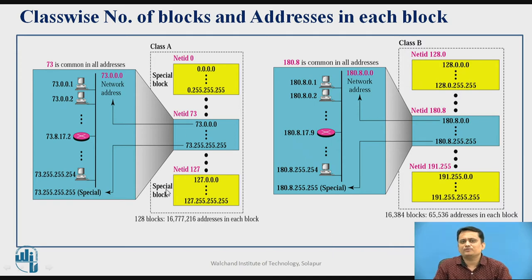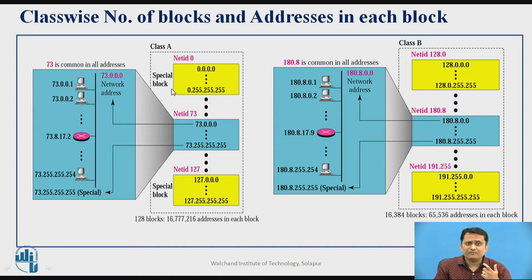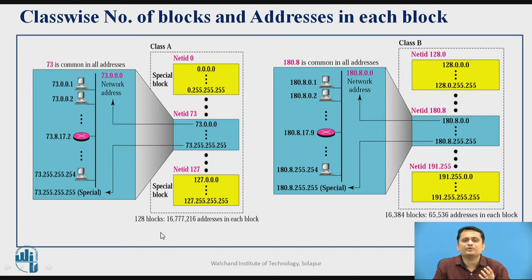Looking at the blocks representing classful addressing: in a class A type IP address you can have around 127 different networks because the network ID is 7 bits and 1 bit is used for identifying the class itself. Within a network you can have 2 raised to 24 different hosts. So in general you can have 128 blocks with a huge number of hosts in each block.